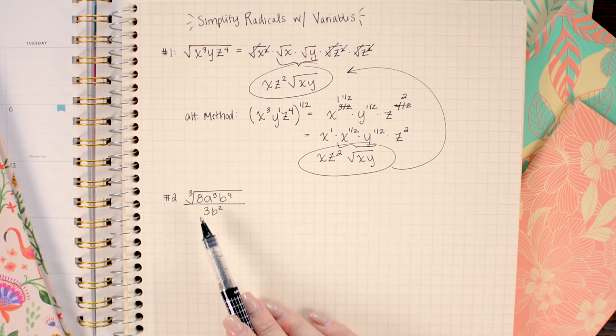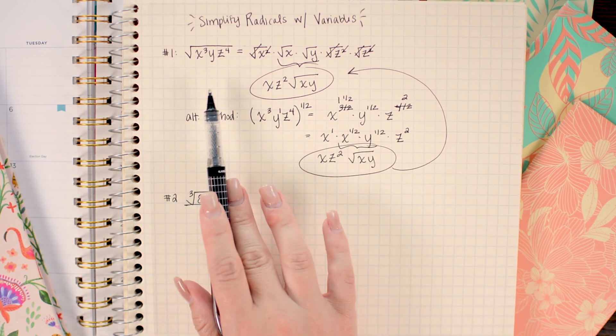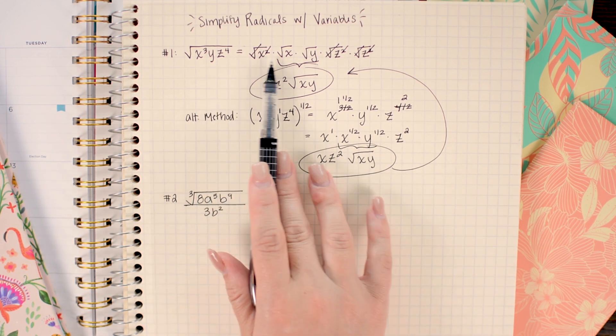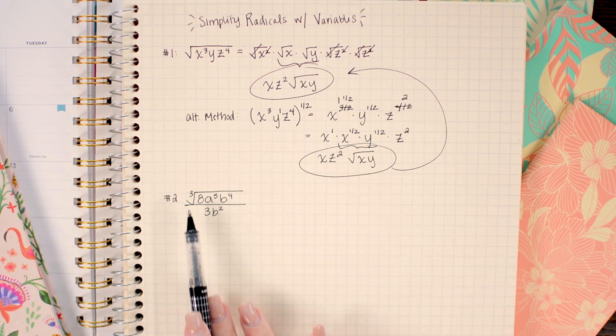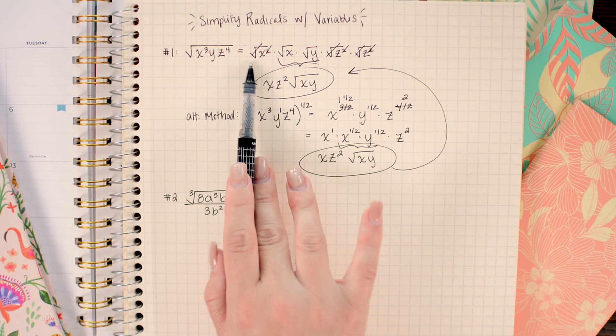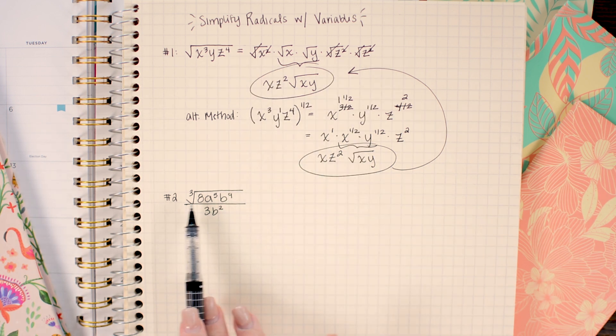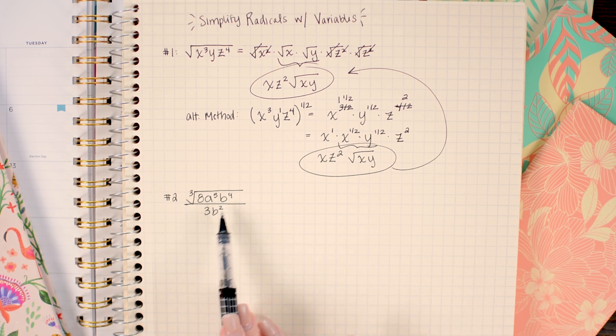In this next problem we're dealing with a cube root which looks more difficult but it's actually going to work out very similarly to how we did the first problem. But instead of looking for these groups of twos I'm going to be looking for groups of threes since I have a cube root. So my first step is to split up the radicals with each thing that's being multiplied and I'm gonna split out a to the fifth into as many groups of threes as I can and b to the ninth into as many groups of threes as it can as well.